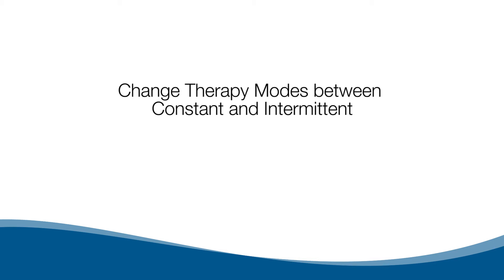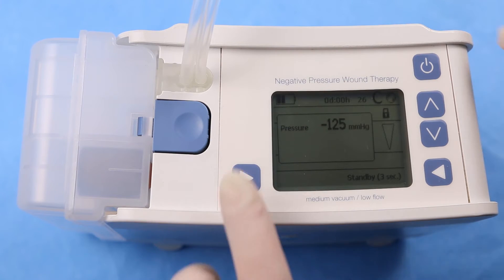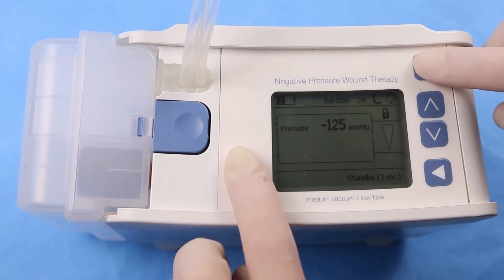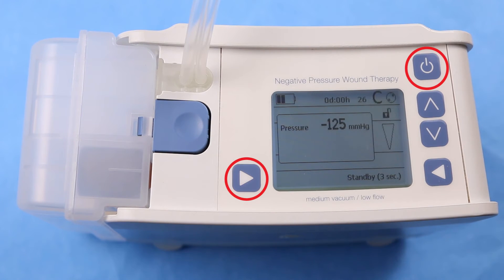To change therapy modes between constant and intermittent, the pump must be placed in administrative mode. To enter the administrative mode, press and hold the bottom left button and press the top right button.